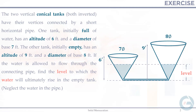This problem is quite challenging. The two vertical conical tanks have their vertices connected by a short horizontal pipe. One tank, initially full of water, has an altitude of 6 feet and a base diameter of 7 feet. Water is allowed to flow through this pipe. The other tank, which is initially empty, has an altitude of 9 feet and a diameter of 8 feet. Find the level to which the water will ultimately rise in the empty tank.